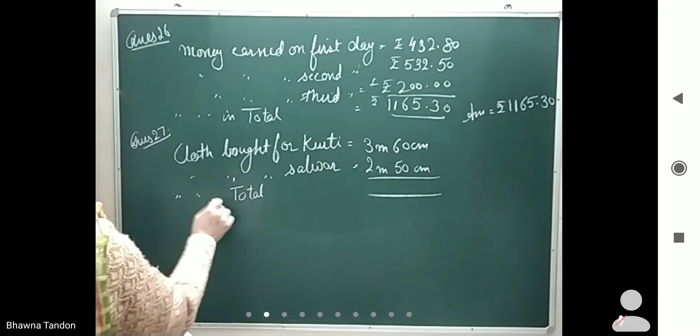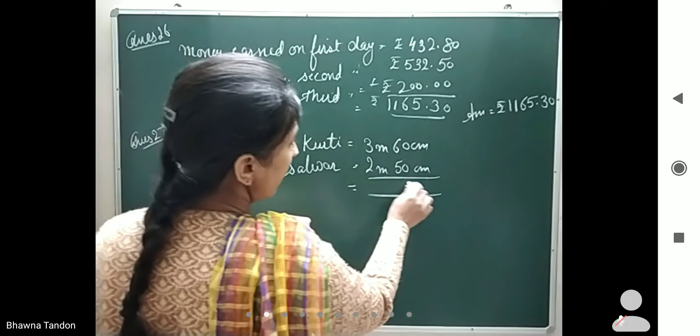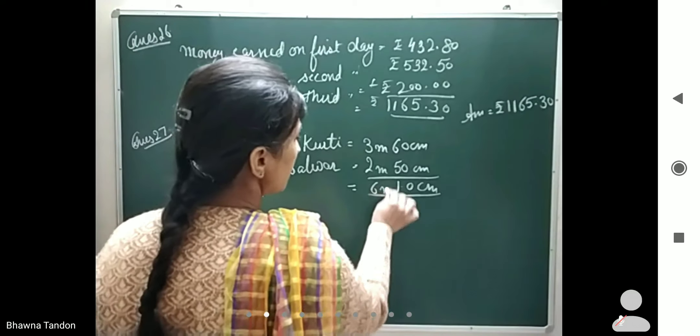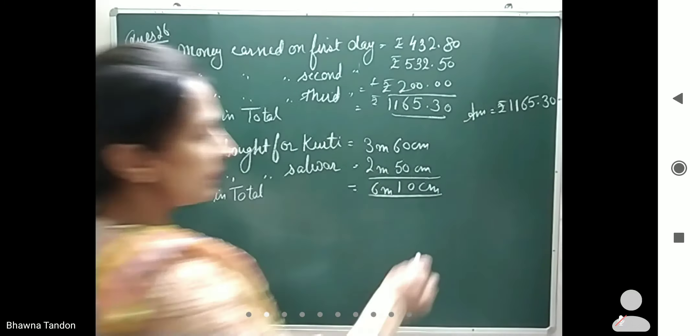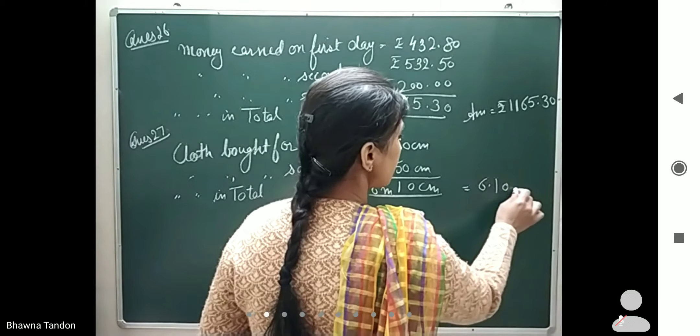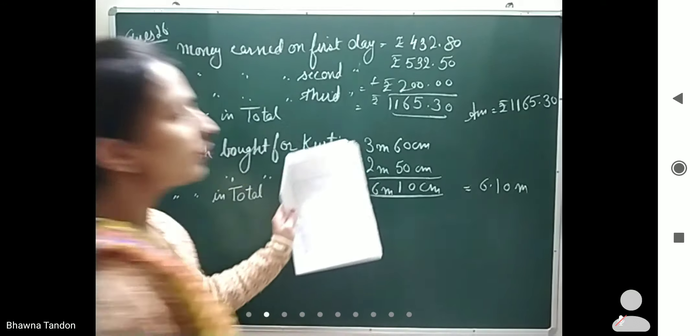Cloth bought in total: when I add, it will be 0, 1, and 6. You can write your answer as 6 meters 10 centimeters, or convert to a decimal like 6.10 meters, or you can convert before adding, as per your wish.